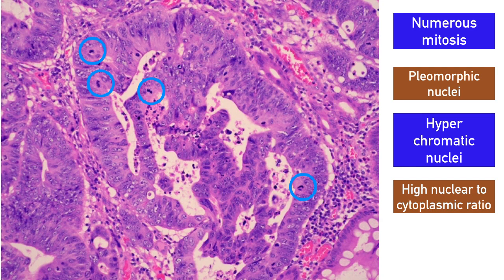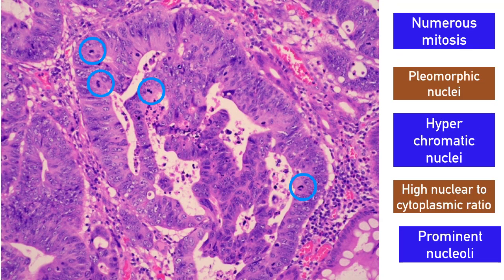There is a high nuclear-to-cytoplasmic ratio, where you can see the nucleus is enlarged compared to the cytoplasm. Lastly, you can see prominent nucleoli inside the nucleus. These are all features of malignant tumor cells.